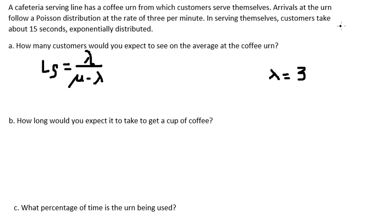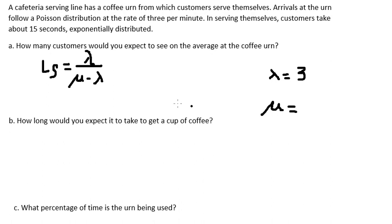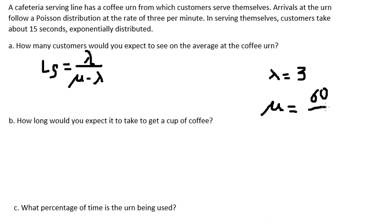In this problem, lambda equals 3 customers per minute. For the service rate, we know that it takes 15 seconds per customer. To find mu, we use 60 divided by 15, which gives us 4 customers per minute.